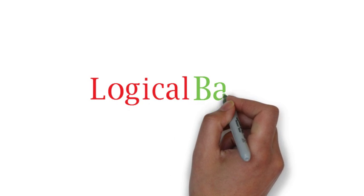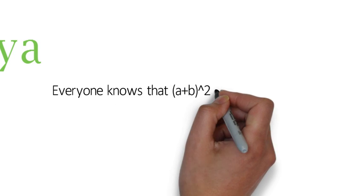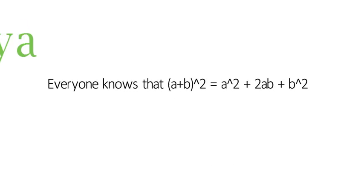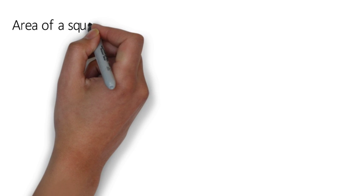Hello everyone, welcome to Logical Panya. Everyone knows that (a+b)² = a² + 2ab + b². But do you know why? Area of a square with side s is side², and here you have to find (a+b)². Do you find any similarity here?